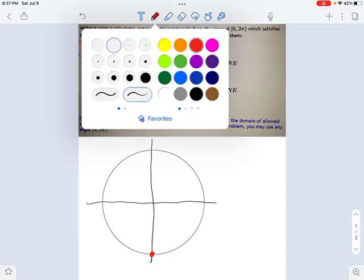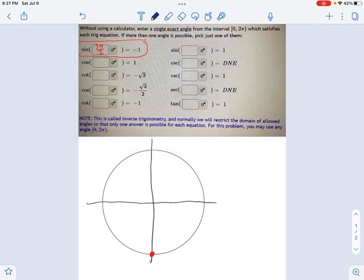So let's try another one. Let's think about the cosine of some angle which gives me 1. So where is the cosine equal to 1? Well, cosine is the x coordinate. Okay, so the x coordinate is 1 right there. And that is the angle 0. Cool.